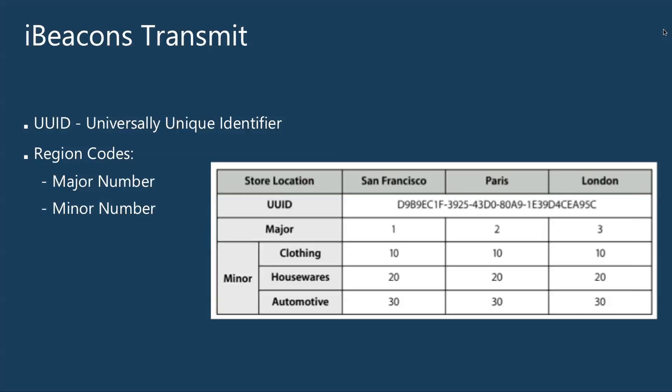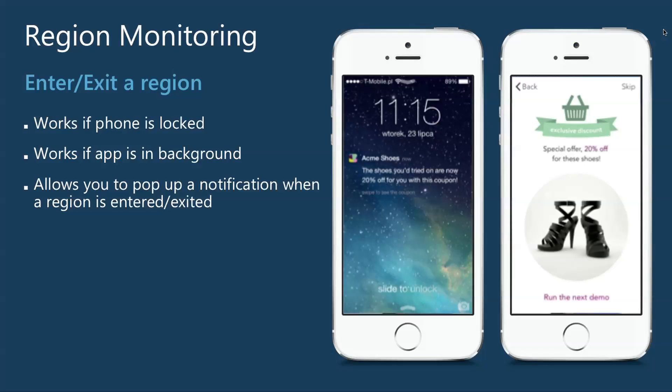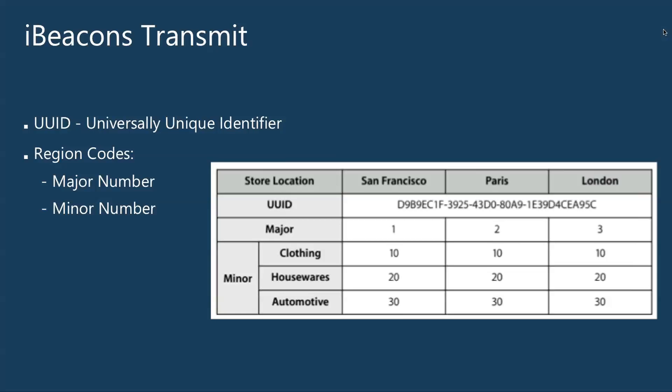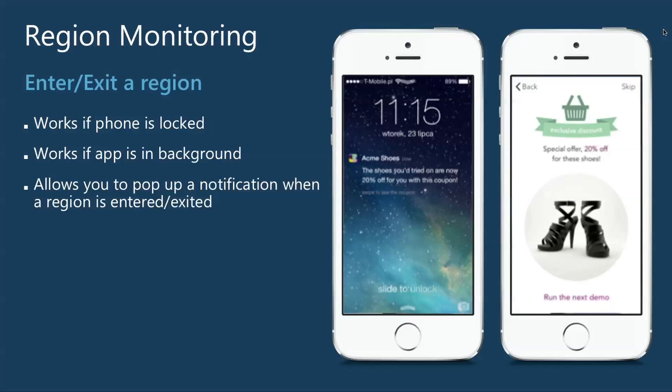In any of the SDKs you use, iBeacons have the simple premise — same with stickers we'll talk about later — of region monitoring and ranging. These are the two important concepts of iBeacons. They're transmitting three pieces of data: UUID, major, and minor number, and then the actual API does the rest of the heavy lifting. Region monitoring enables you to get notifications when you enter or exit a region. A region is specified in one of three ways: simply the UUID, a UUID and major number, or a UUID, major, and minor number.